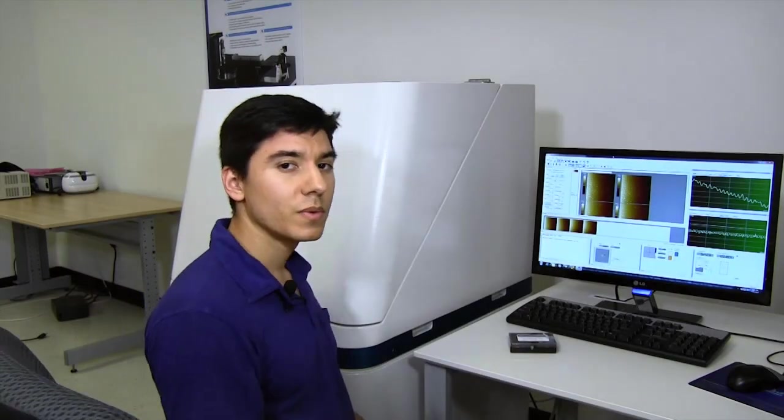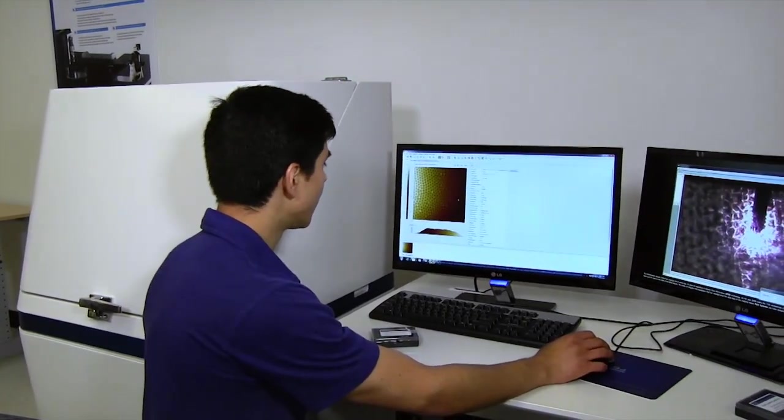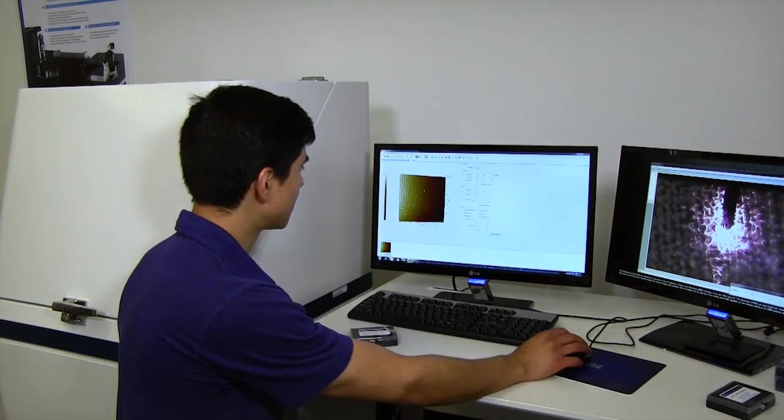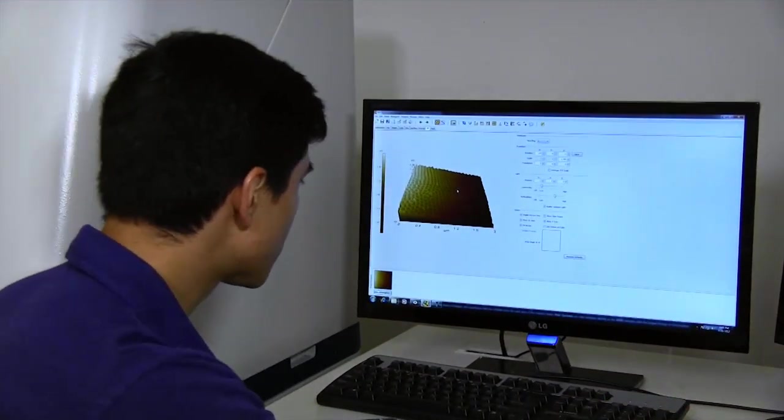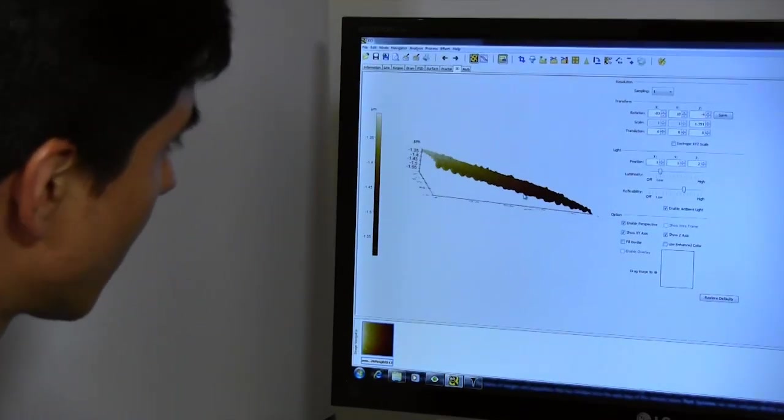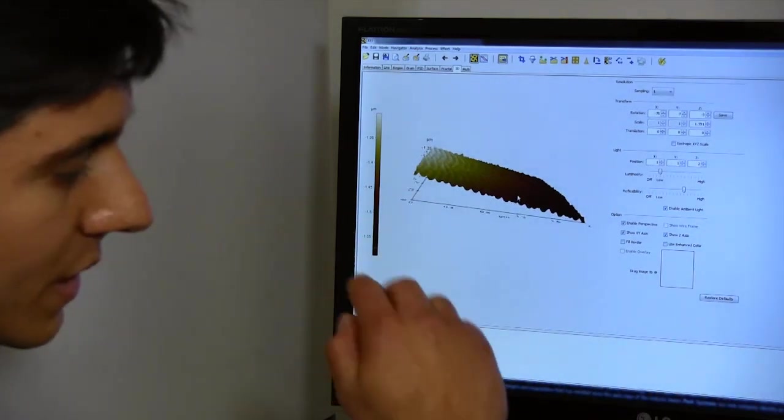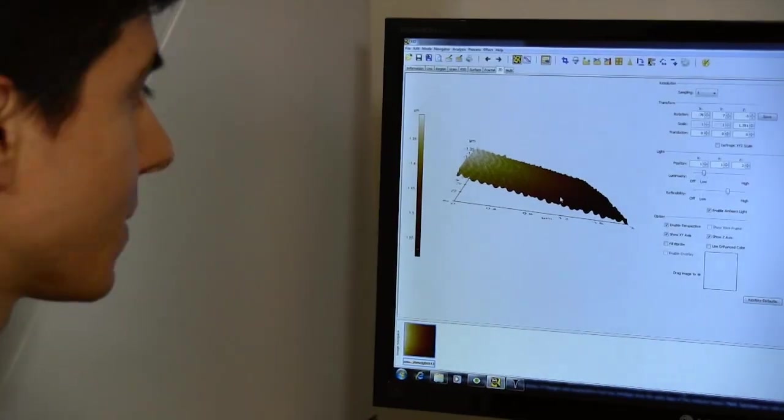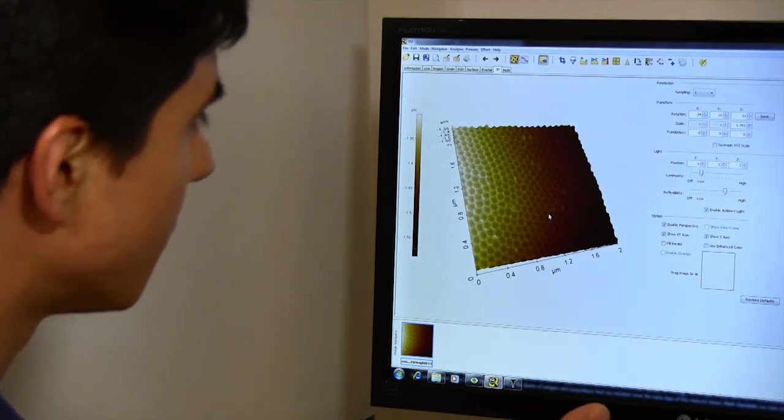Now that the image is finished scanning, I can send it to the image analysis software and look at ways to get interesting measurements or display the data. First, if I load the 3D view, we can see the raw unprocessed image. It's on a tilt because I was scanning one side of this undulating surface. To make this easier to view,